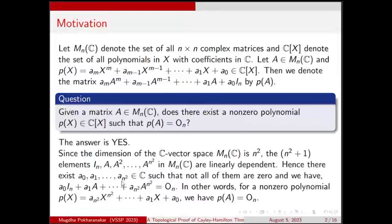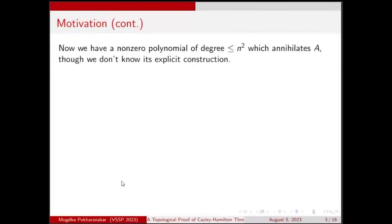We have a non-zero polynomial of degree at most N² such that it gives the zero matrix when evaluated at A. The issue is we don't know what the scalars A_0, A_1, ..., A_(N²) are explicitly — we only know their existence. We can ask: does there exist a non-zero polynomial of smaller degree, say N, that annihilates A? — and the answer is also yes.